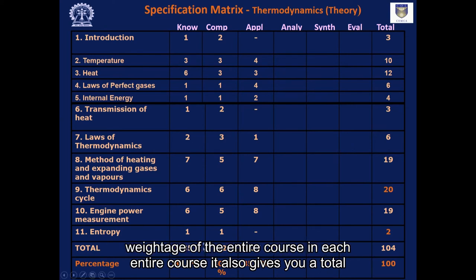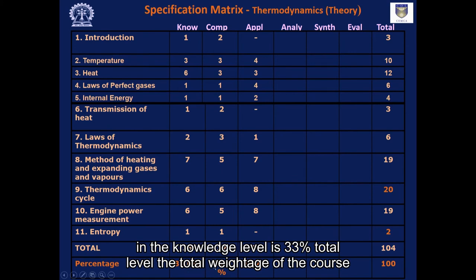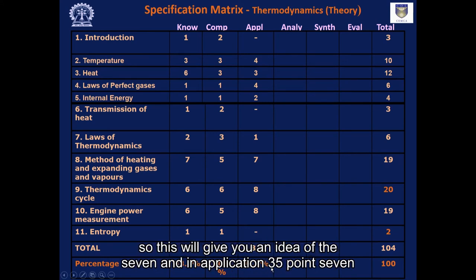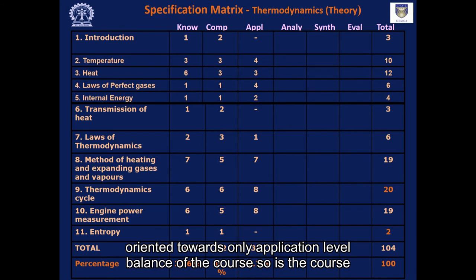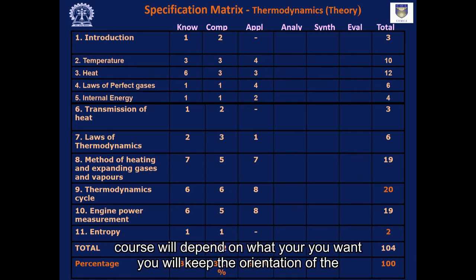The matrix also gives a total weightage of the entire course in each level of learning. When converted to percentages, the Knowledge level accounts for 33%, Comprehension for 30.7%, and Application for 35.7%. This gives you an idea of the balance of the course — whether it is oriented toward only the lower levels or toward the higher levels. Where you set this orientation depends on what you want your students or learners to achieve.